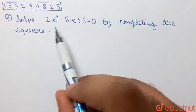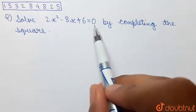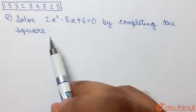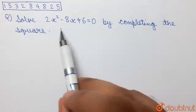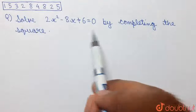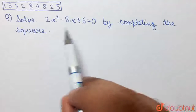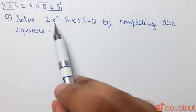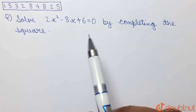Solve 2x squared minus 8x plus 6 is equal to 0 by completing the square. So, we have been given a quadratic equation and we have to solve this quadratic equation for the values of x by the method of completion of square.